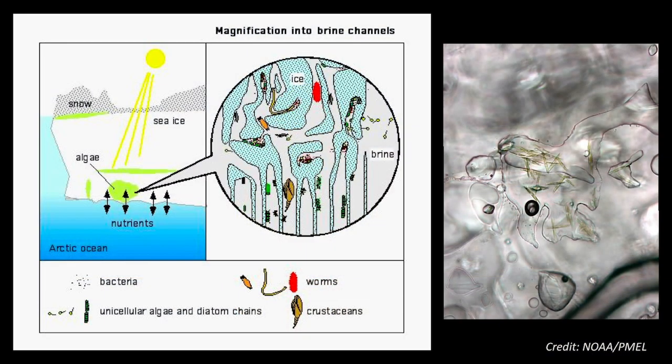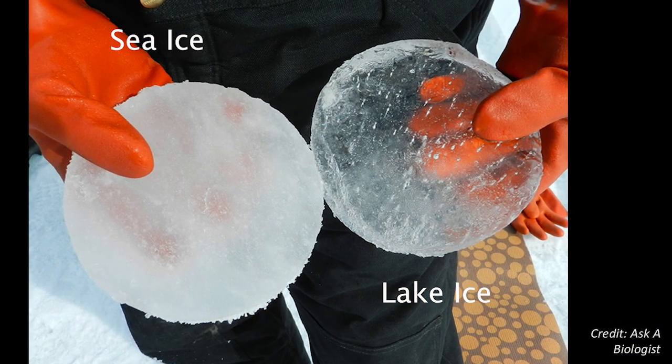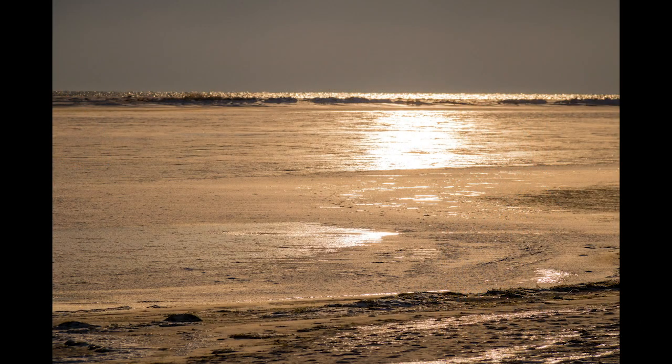Brine is a really special thing about sea ice — it makes sea ice an extremely unique and fascinating thing to study. It creates a habitat for microorganisms to live within the sea ice despite extreme cold and salt. It makes ice elastic and bendable, not as brittle as the freshwater ice you might find on lakes or rivers. It also helps ice remain reflective during the melt season, so when you hear about the ice albedo feedback, salt and brine affect that.